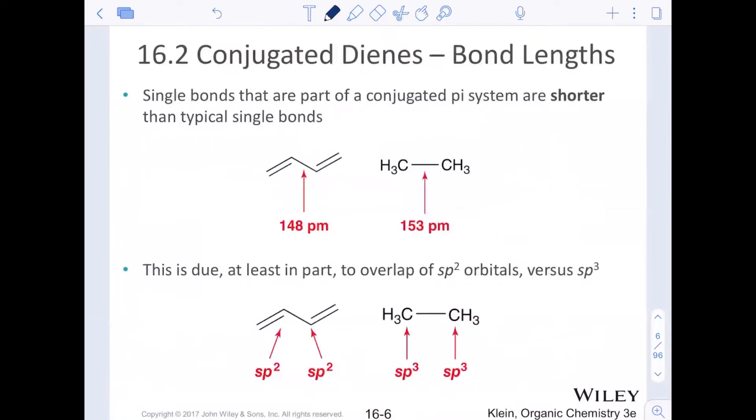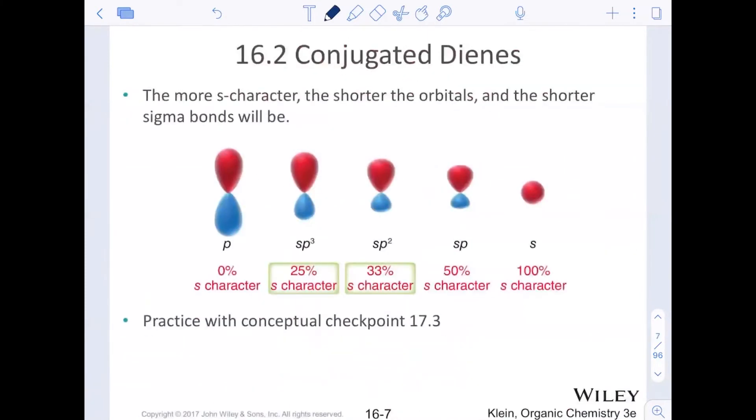Now, the single bonds that are part of this conjugated pi system are technically shorter than their typical single bond, and what that is due to is partially to the idea that the carbons of that single bond are sp2 hybridized. We know the sp2 hybridized orbital is smaller than the sp3 hybridized orbital. Remember this type of a chart. The more s character you get, the closer that orbital is to the nucleus, and so the shorter the orbital, and so the shorter the sigma bond will be.